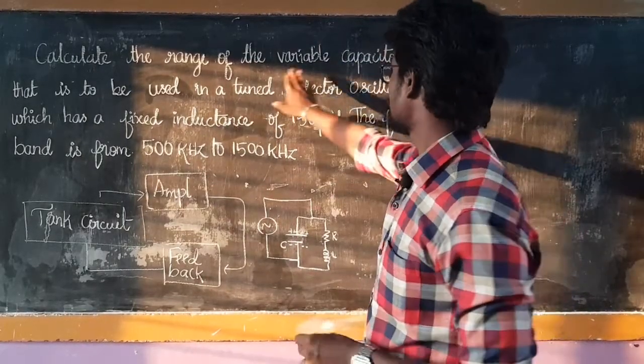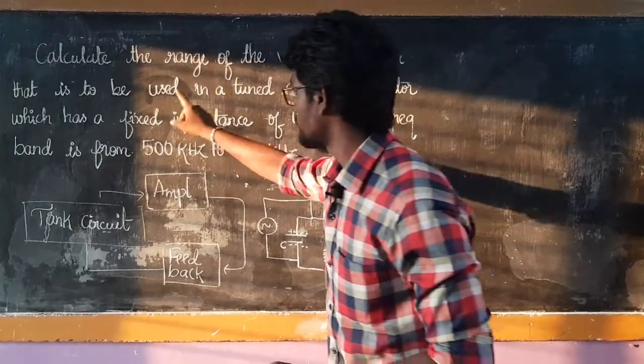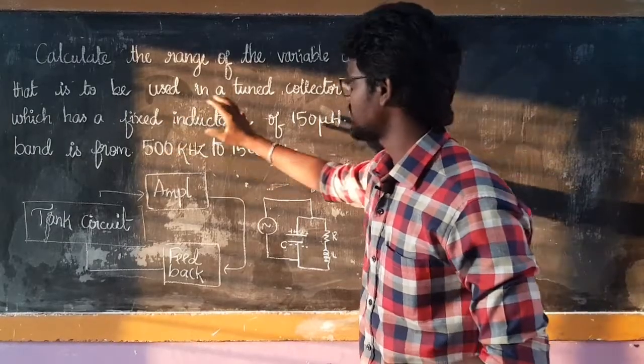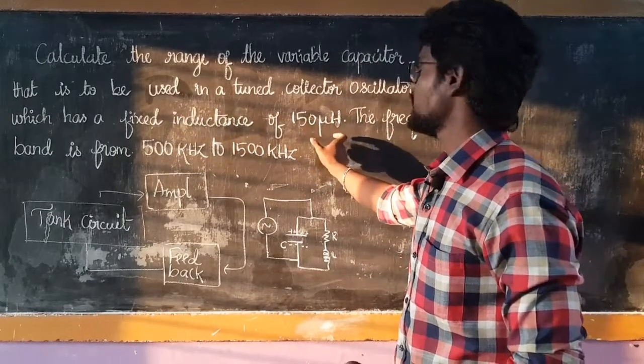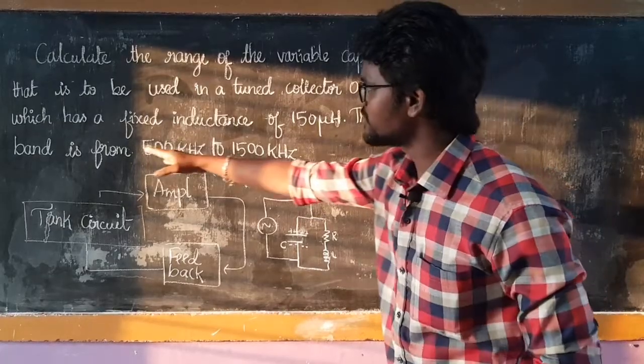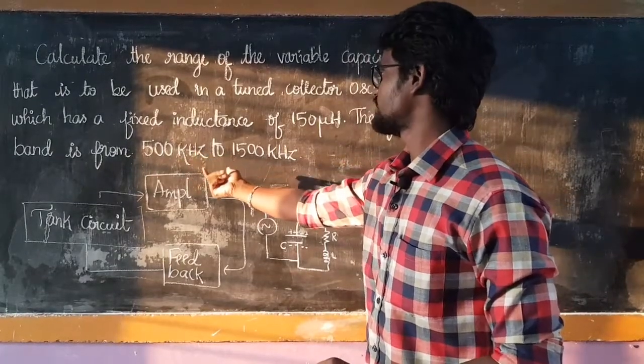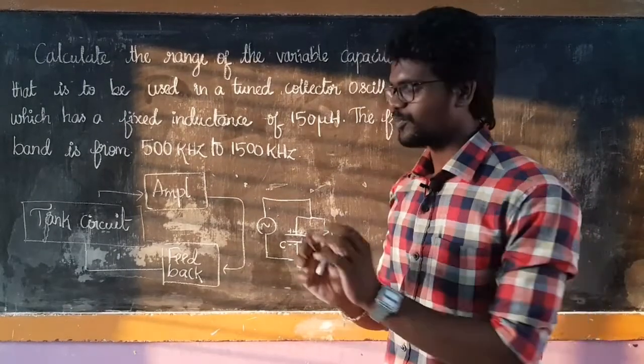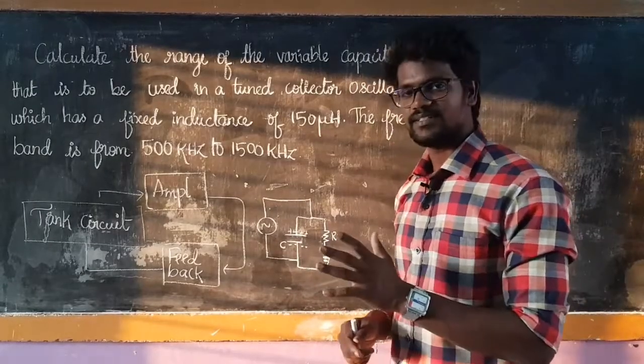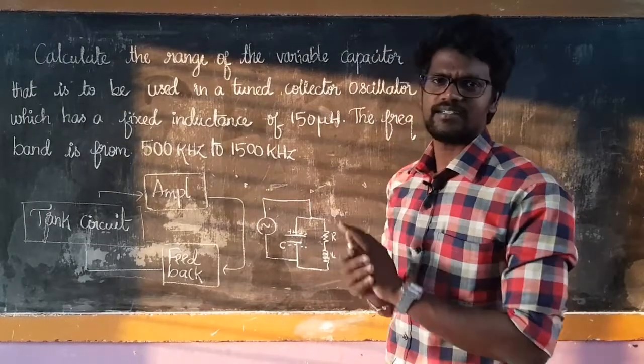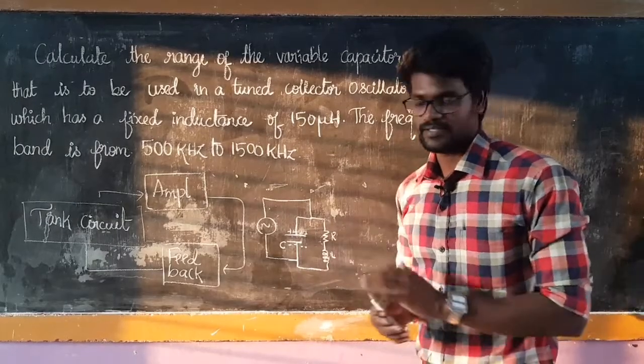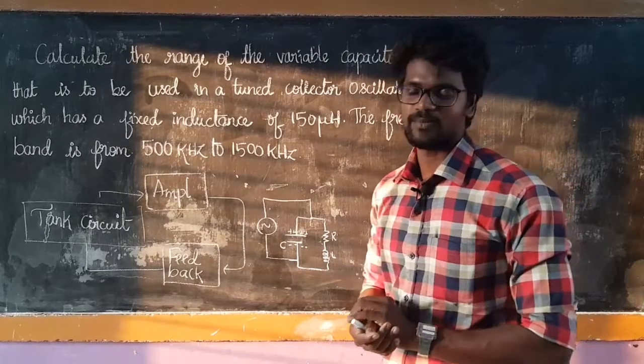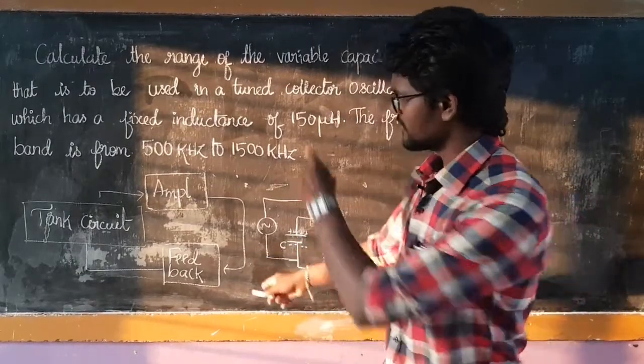Calculate the range of the variable capacitor that is to be used in a tuned collector oscillator which has a fixed inductance of 150 microhertz. The frequency band is from 500 kilohertz to 1500 kilohertz. In this question, it is about the tank circuit, where we need to find the range of the variable capacitor.